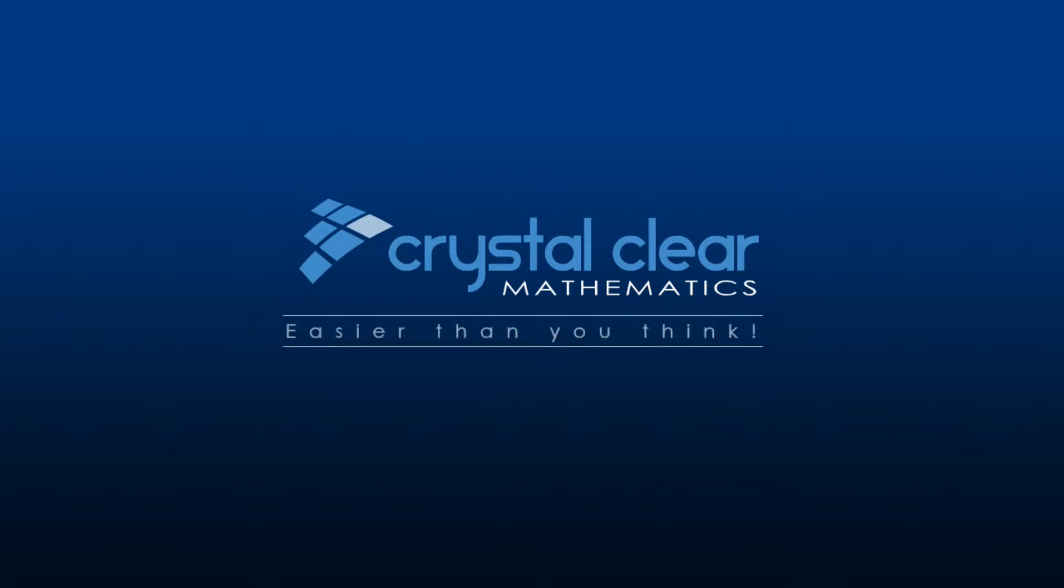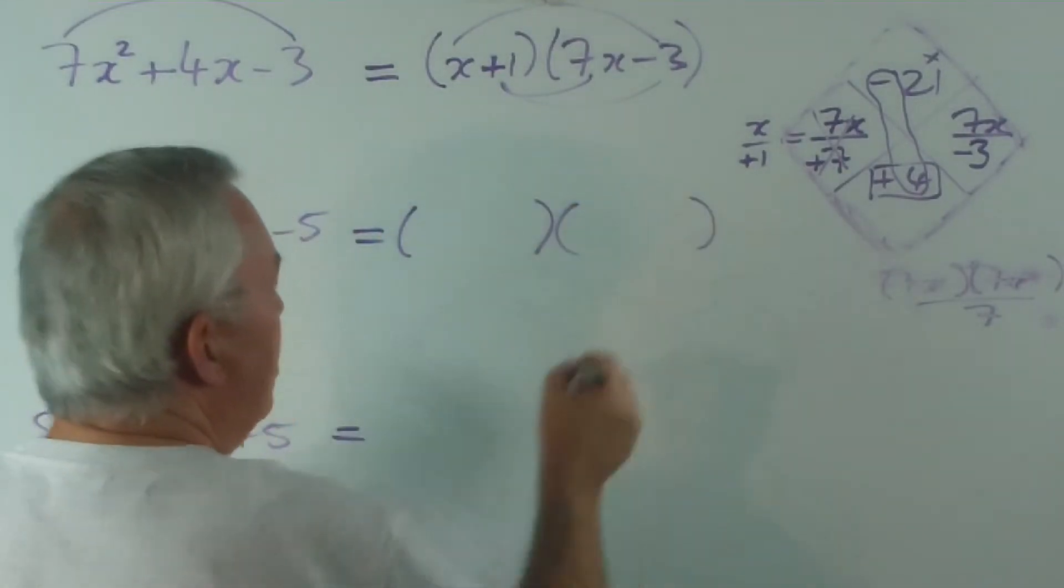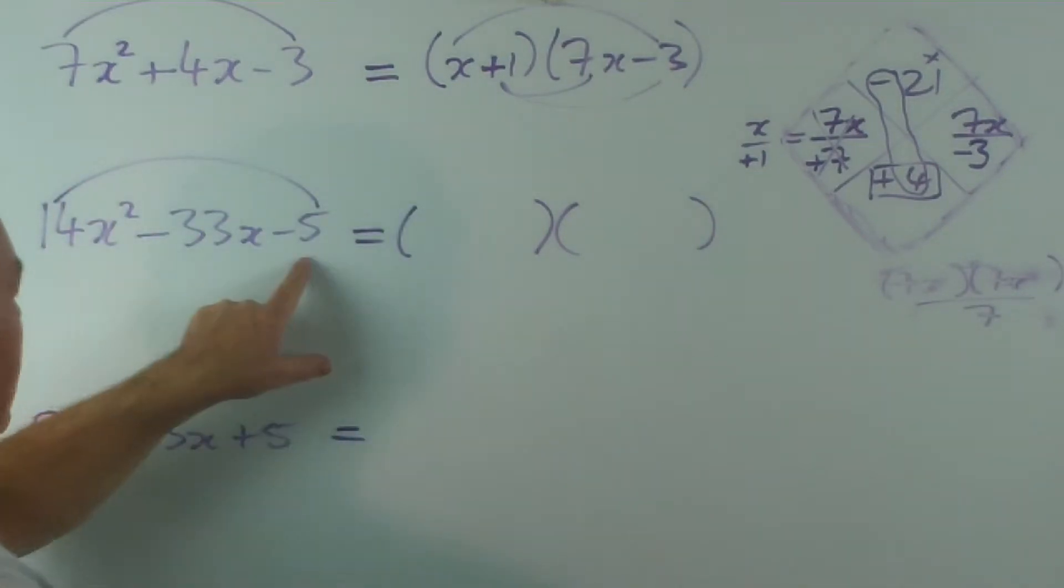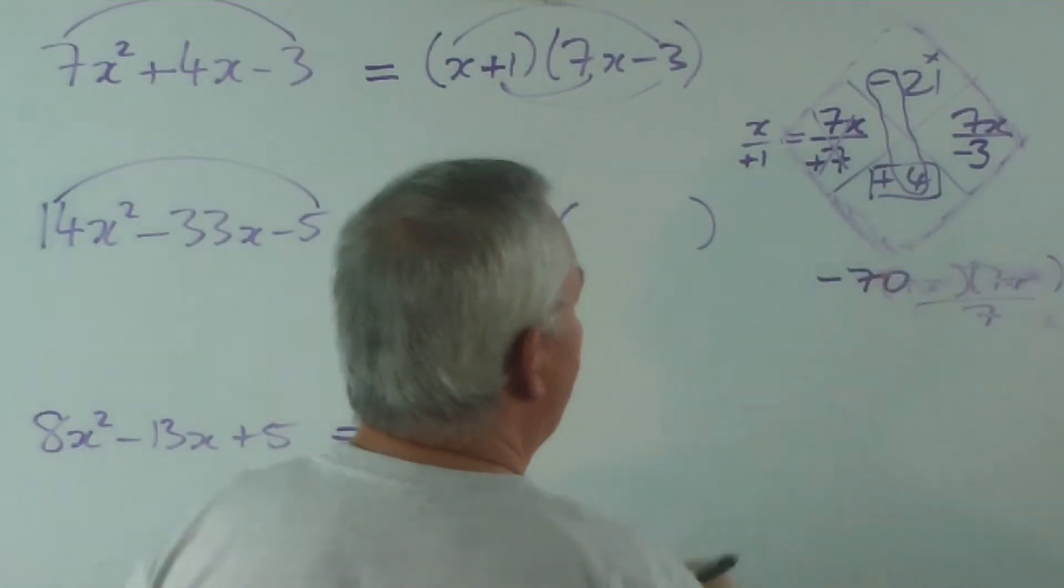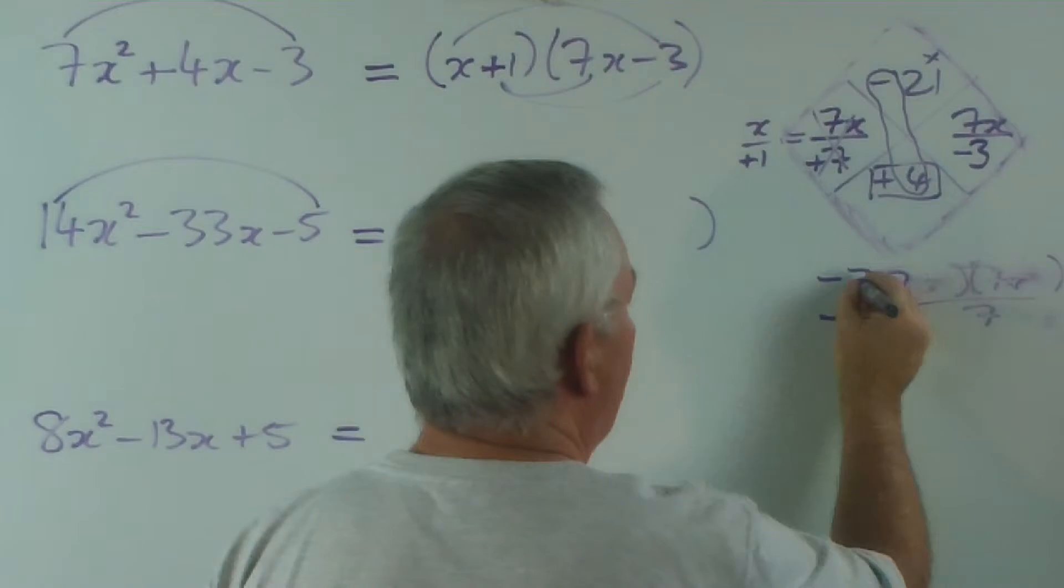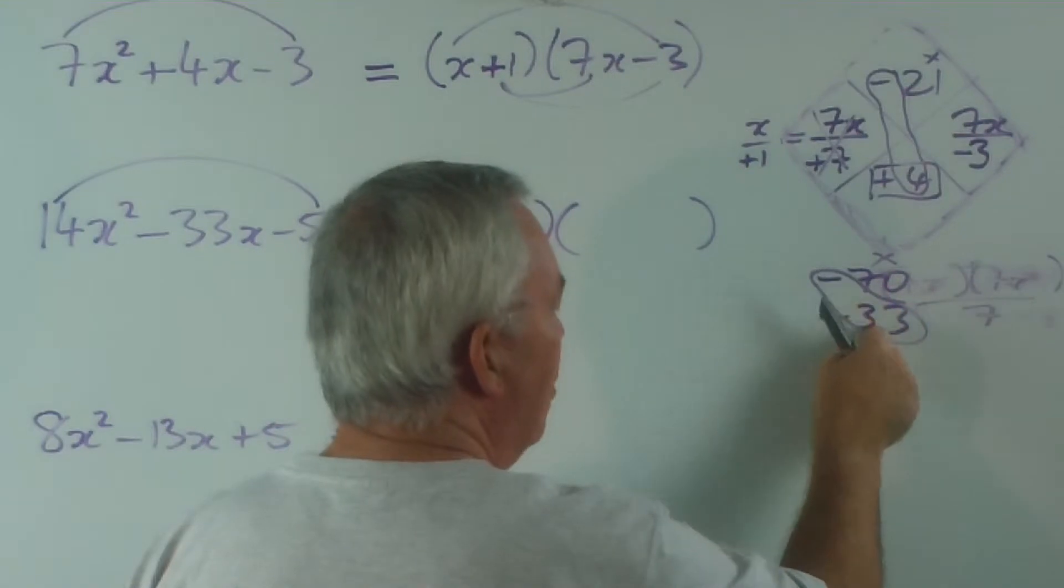So, it's a nice little technique. So in other words, we can set our factors up. Let's work this one out. Quite a large one again. -5 times 14 is -70. -33. I might put the -33 straight underneath it.